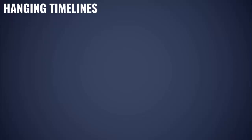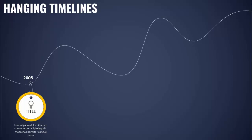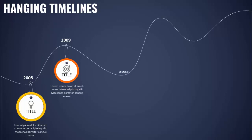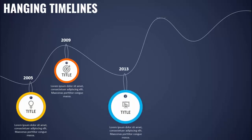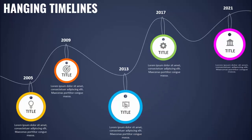In today's tutorial I'm going to show you how to create a hanging timeline slide in PowerPoint. When you click, a string or thread comes in and the first option appears — the year 2005 — with an oval shape, icon, title, and detailed text at the bottom. Then 2009, 2013, 2017, and 2021. Depending on your requirement, you can increase or decrease the number of years.